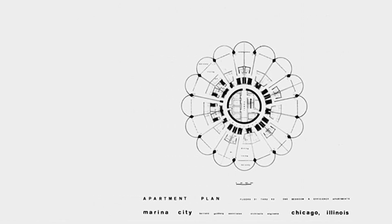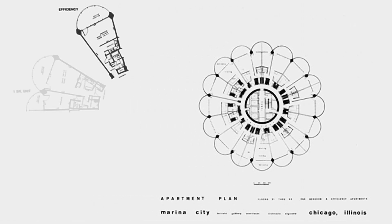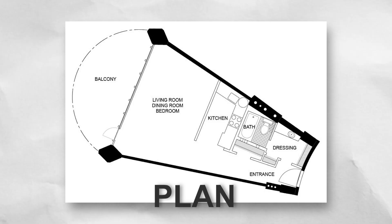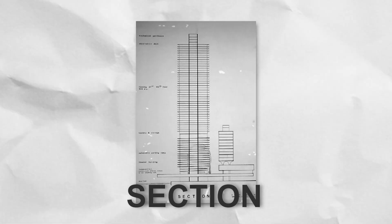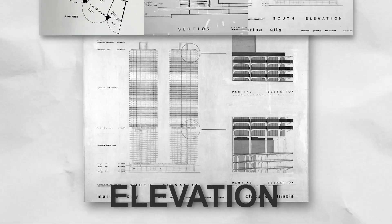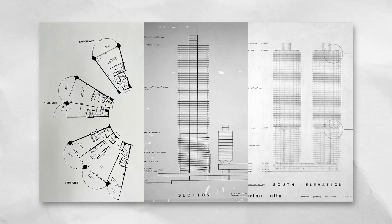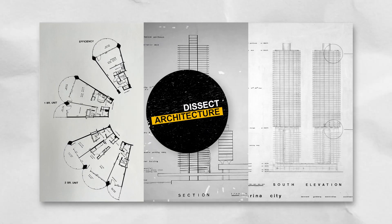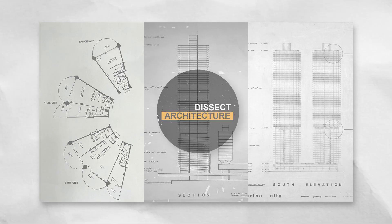Drawings also help architects organize spaces and layouts as well as create important connections. In this video, we'll dissect the three most commonly used drawings — the plan, section, and elevation — and discuss what they are and why they are so important to understanding architecture.